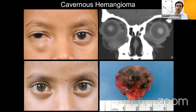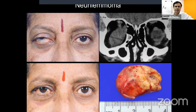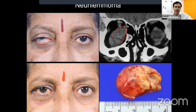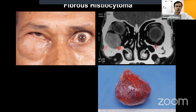Various tumor locations have been operated via the transconjunctival approach: a cavernous hemangioma in the inframedial aspect removed by the medial transconjunctival approach; a neurinoma of the infraorbital nerve pushing the eye up, removed by the inferior fornicial approach; a fibrous histiocytoma of the infrotemporal aspect infiltrating the infraorbital nerve — the nerve had to be sacrificed, and despite extension into the inferior orbital fissure, surgery was fairly easy transconjunctivally.